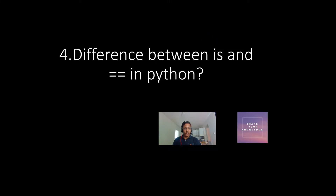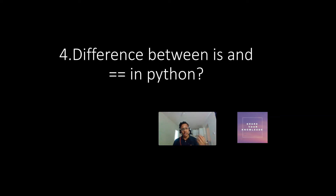Welcome to this series of Python interview questions. Today we will be looking at an important question: what is the difference between `is` and `==` in Python? Both are used for checking whether two objects are equal — to find out the equality between them — but we want to understand in what places we should use `is` and in what places we should use `==`.